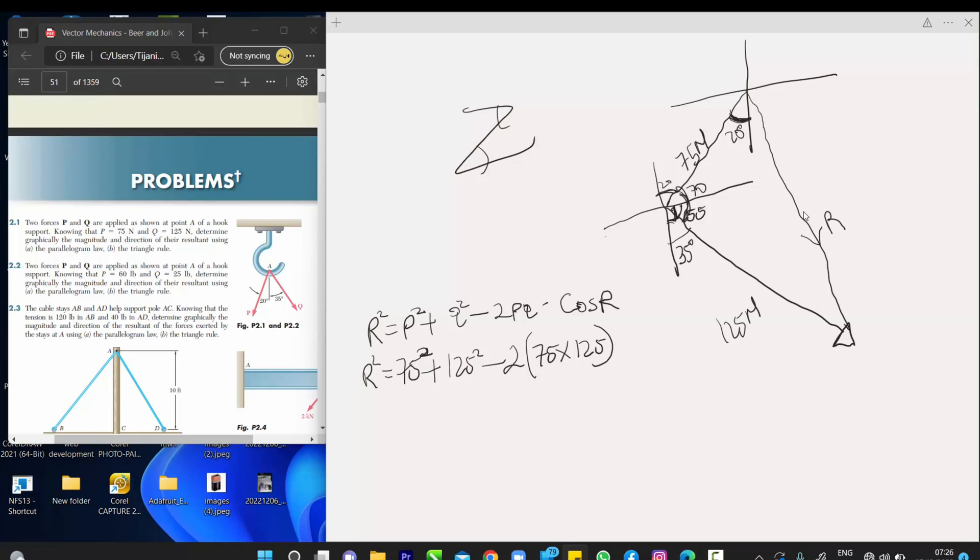So, the reason why I chose, I wrote cos R is because I want you to understand that it's the angle from here to here. So, 70 plus 55 is 125. So, we have dot cos, not dos, cos 125 degree.